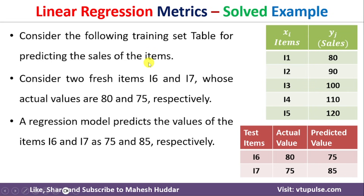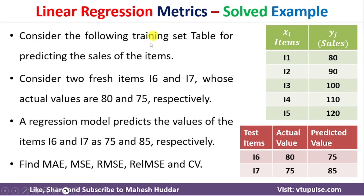Now we need to evaluate the performance of this particular regression model using different metrics. The first one is Mean Absolute Error, the second is Mean Squared Error, the third is Root Mean Squared Error, the fourth is Relative Mean Squared Error, and the fifth is Coefficient of Variation.